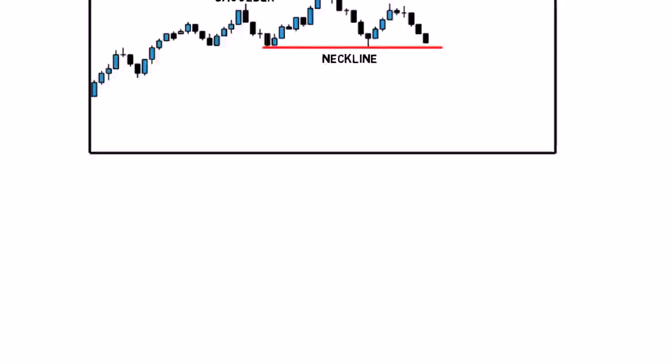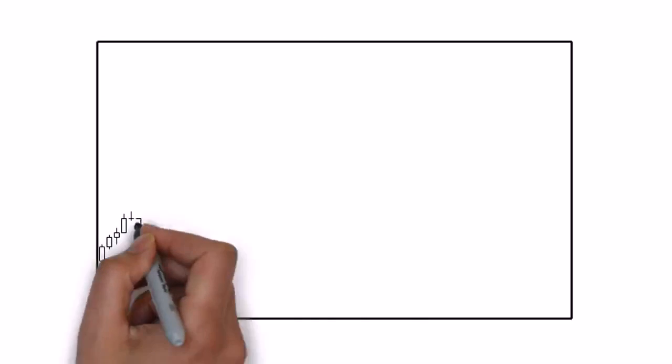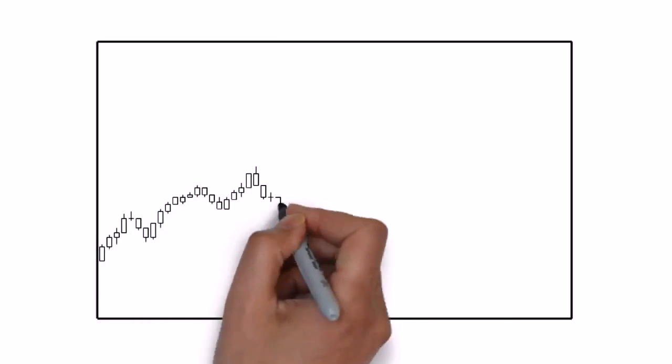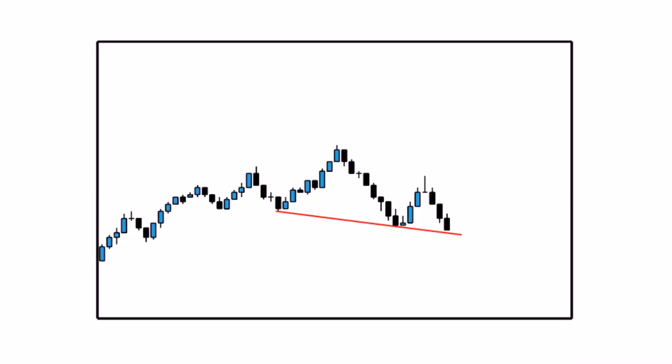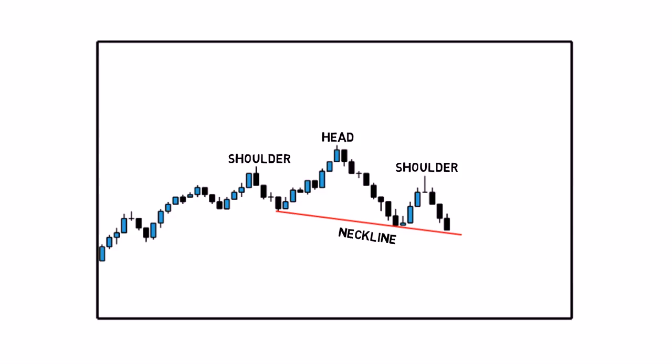The third is a downward sloping neckline. This one produces the most reliable reversal signal, as it has already managed to make a lower low.